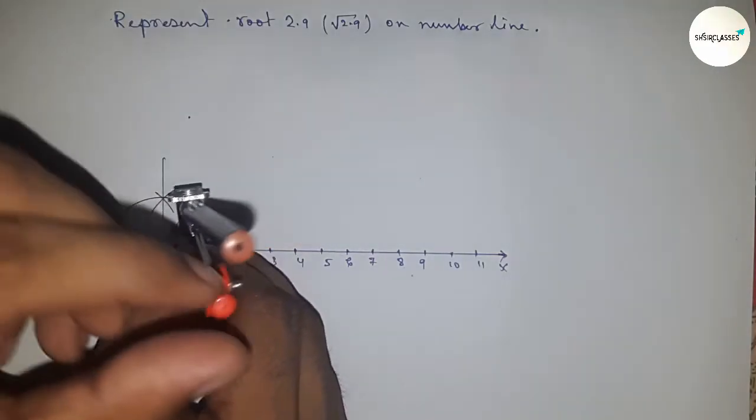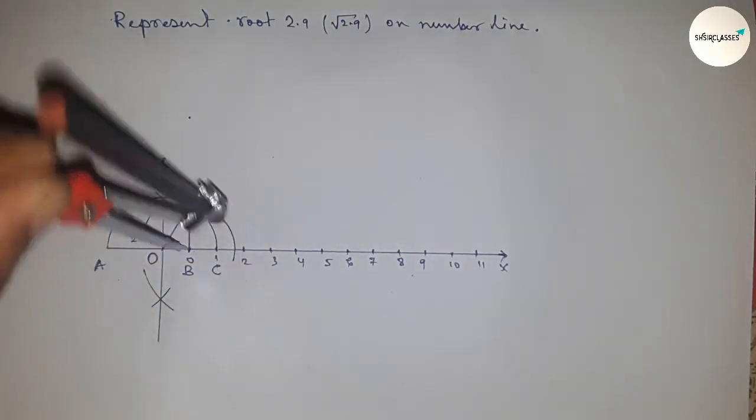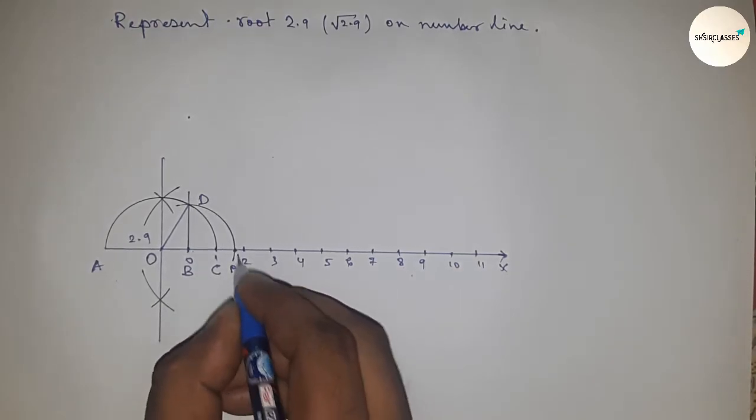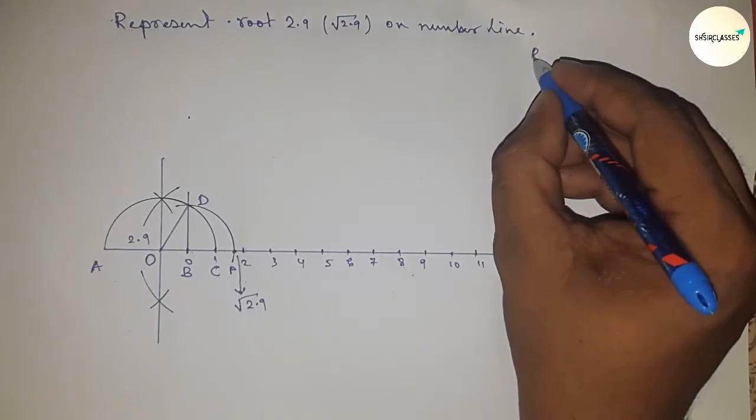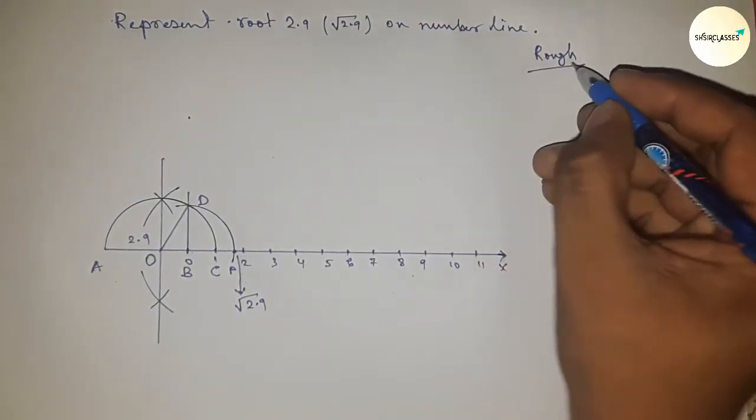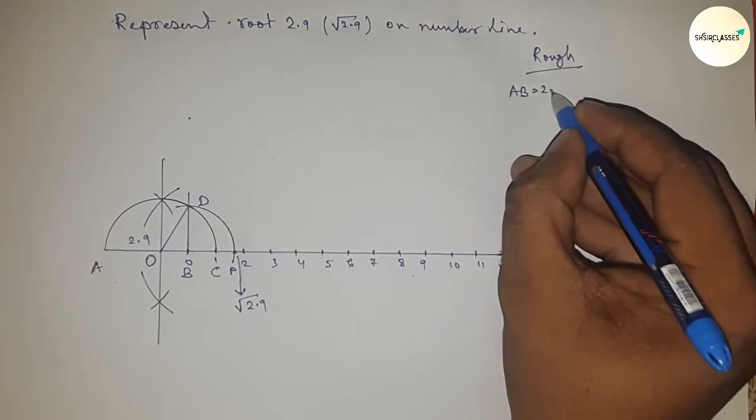Now take the length BD with a compass and draw an arc which meets the number line at point P. This is the representation of root 2.9. Now let's discuss the verification calculation for root 2.9.